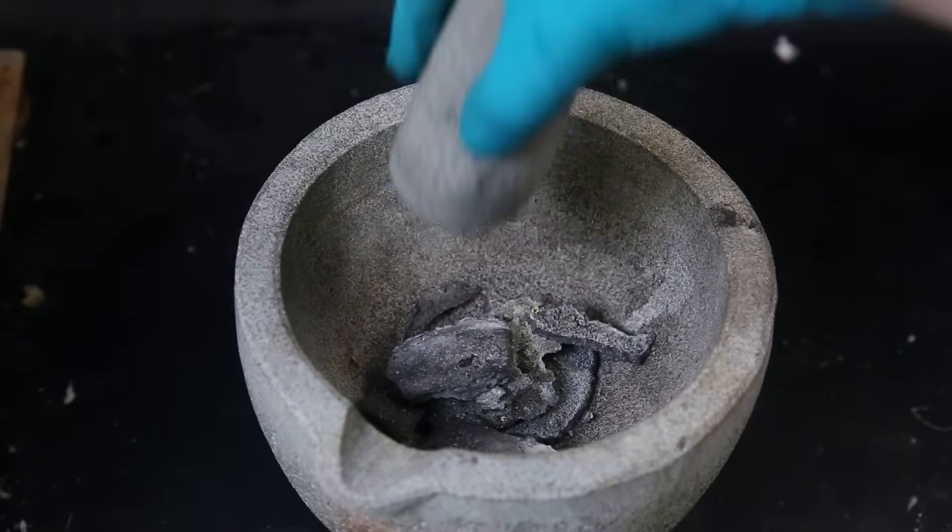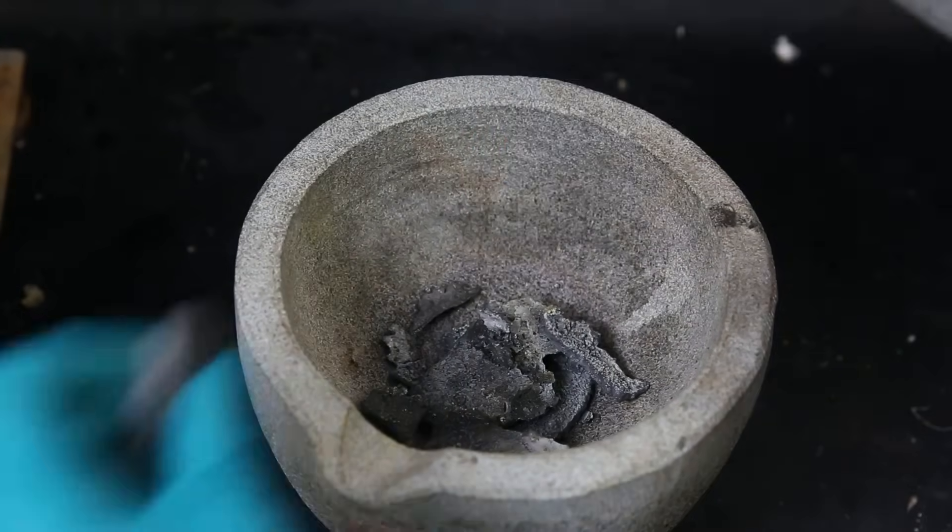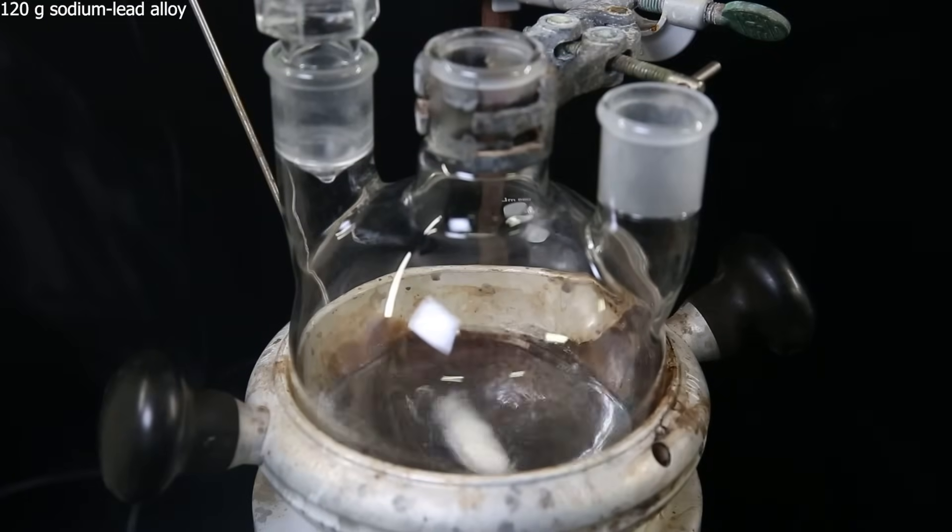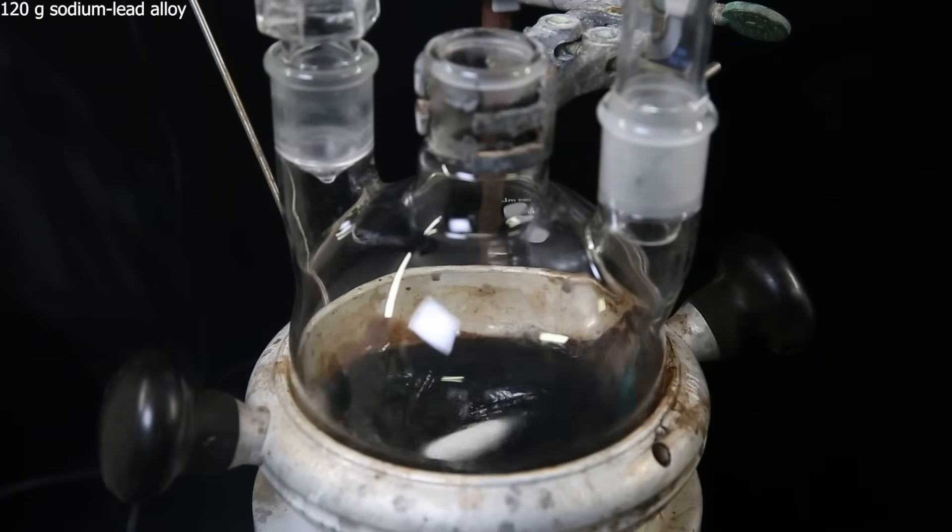For the next reaction, I will crush the alloy into smaller pieces by hitting it with a pestle. When the pieces are small enough, I move all of it to the flask with the bromoethane while stirring.